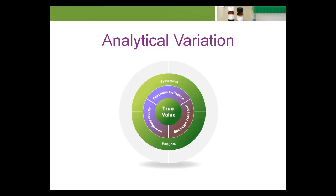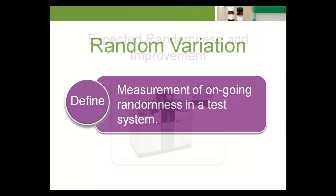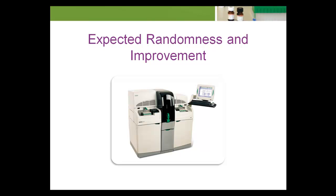Let's look more closely at each form and what contributes to their causes. Random variation is also known as imprecision. Random variation is the measurement of ongoing randomness in a test system. Each instrument or kit has a certain amount of expected randomness, as described by the manufacturer in the manual or product insert. As instruments become more computerized and methods become more stable and specific, imprecision has slowly improved.